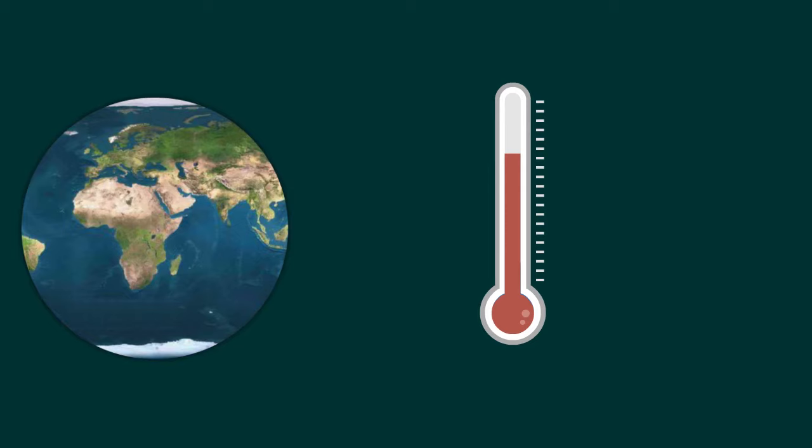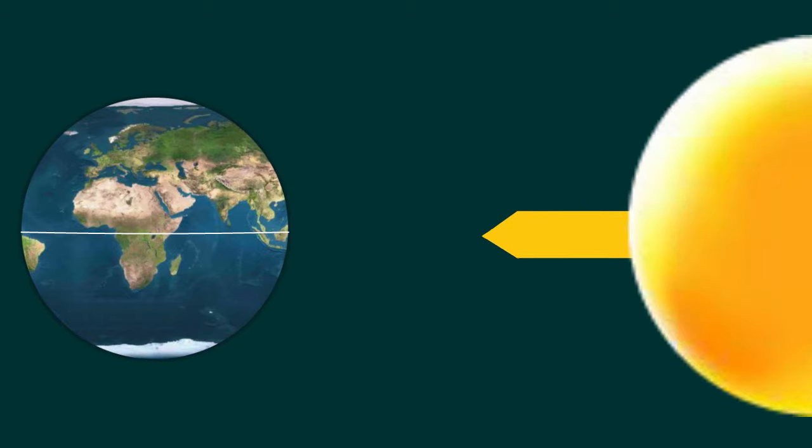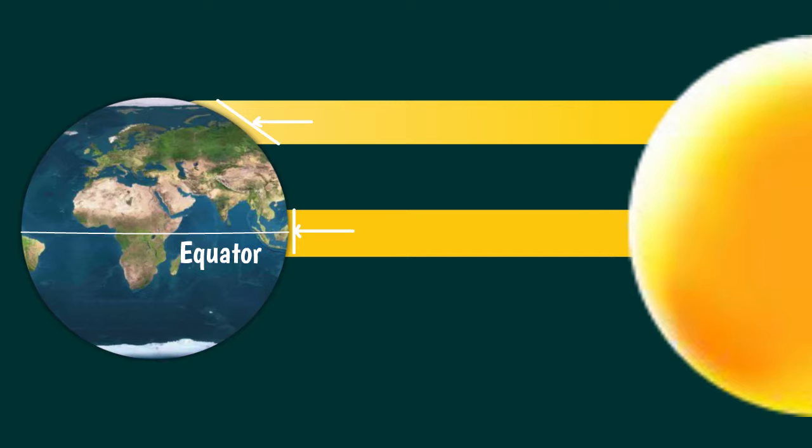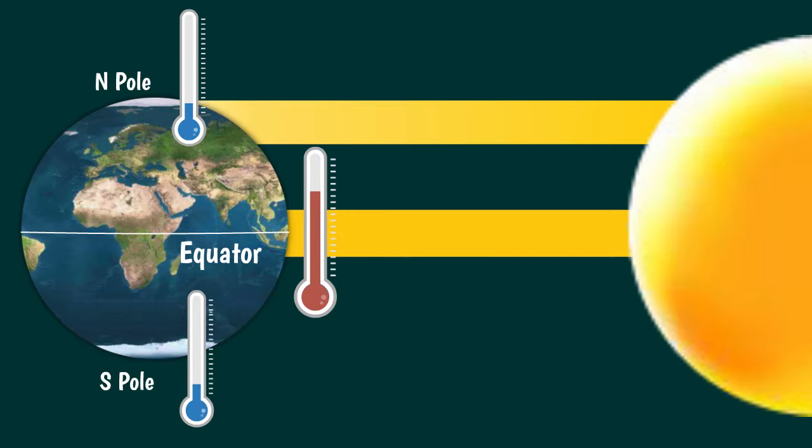You probably know that the sun heats the earth differently depending on the distance from the equator. Directly above the equator sun rays are almost vertical, but they become increasingly inclined and therefore less intense towards the poles. For this reason it is warmer at the equator and colder at the poles.